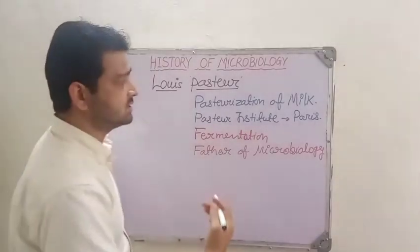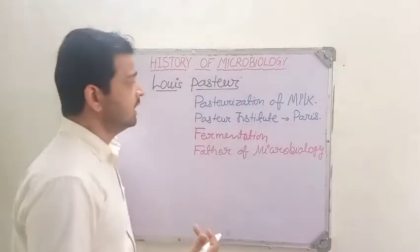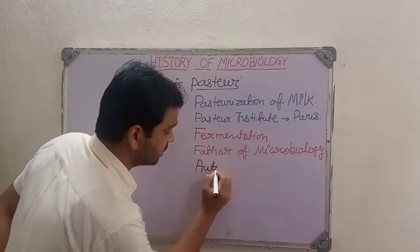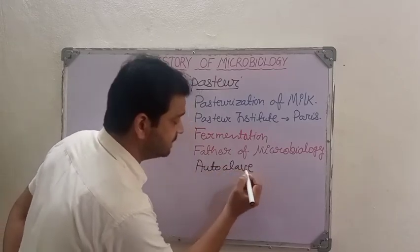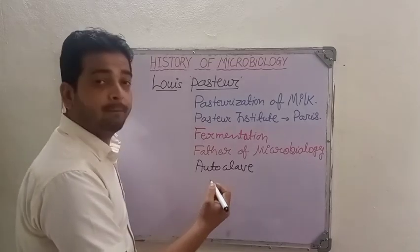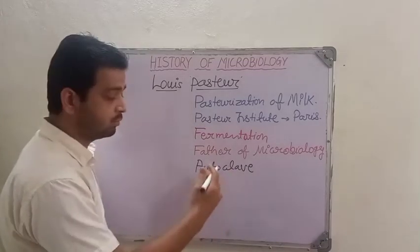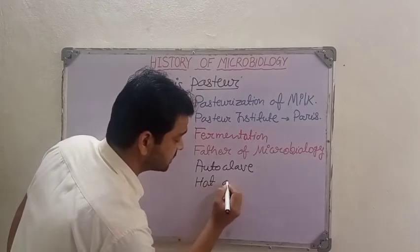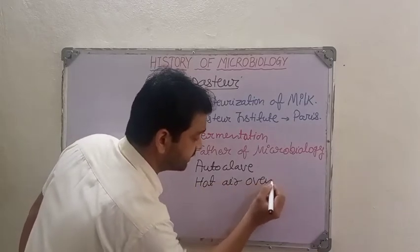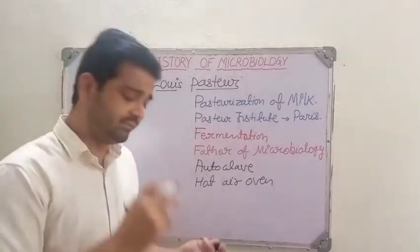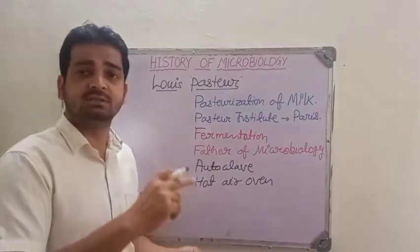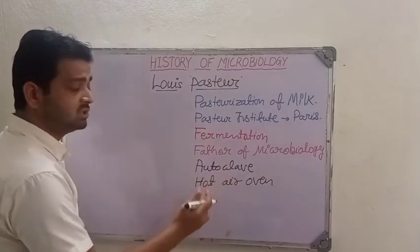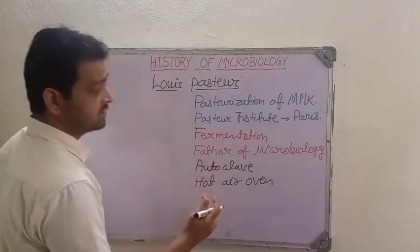When we talk about sterilization — pasteurization itself is partial sterilization — he also gave us the autoclave, which is one of the equipment we use for moist heat sterilization using both temperature and pressure. He also gave us the hot air oven. These two are frequently used for sterilizing glassware, liquid media, and other apparatus in the lab.